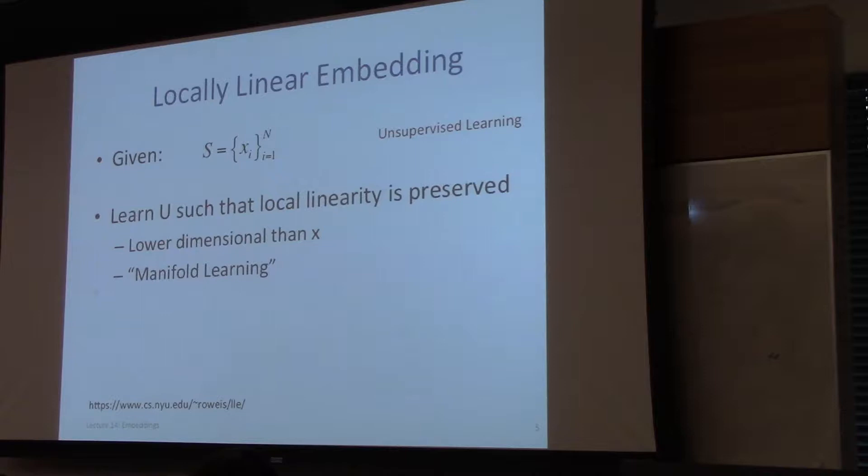This is an unsupervised learning problem where we want to learn a representation U such that local linearity is preserved. Each column of U corresponds to one X, and it's going to be lower-dimensional than X. This is an instance of what's called a manifold.